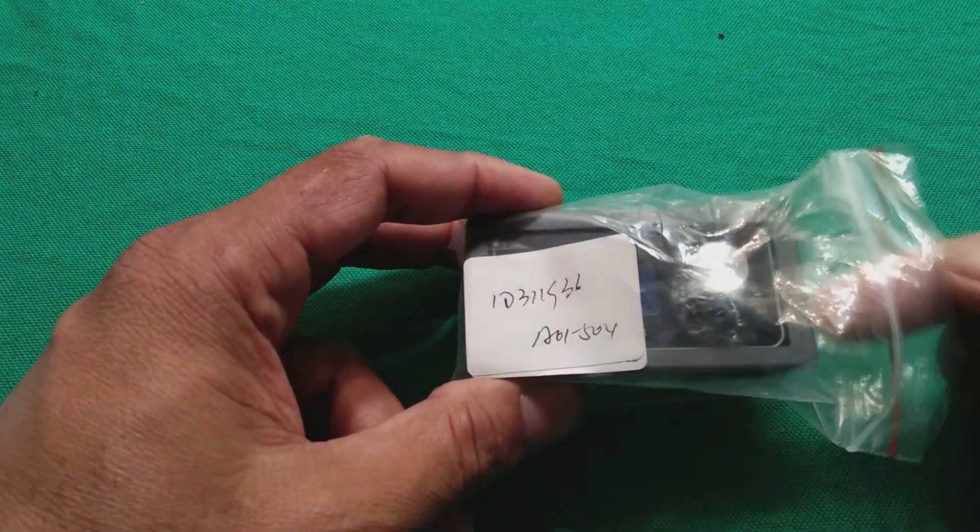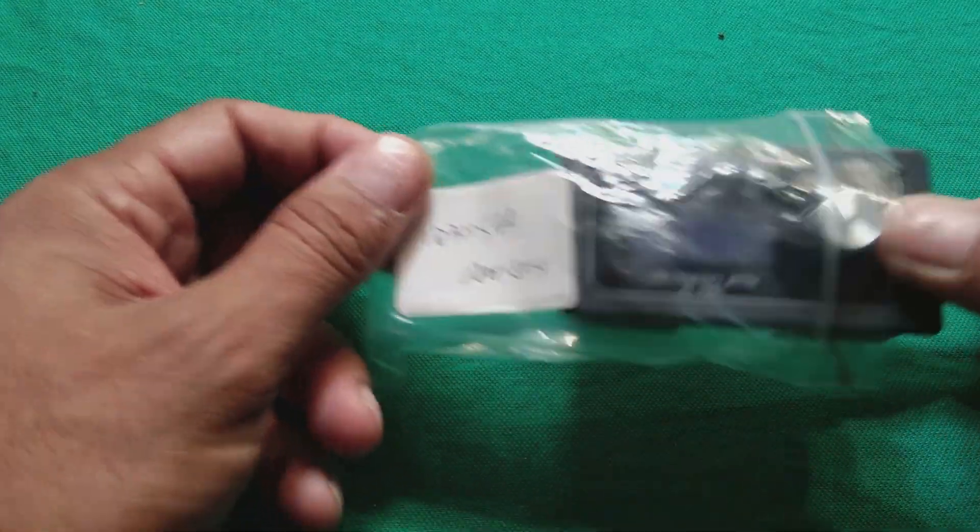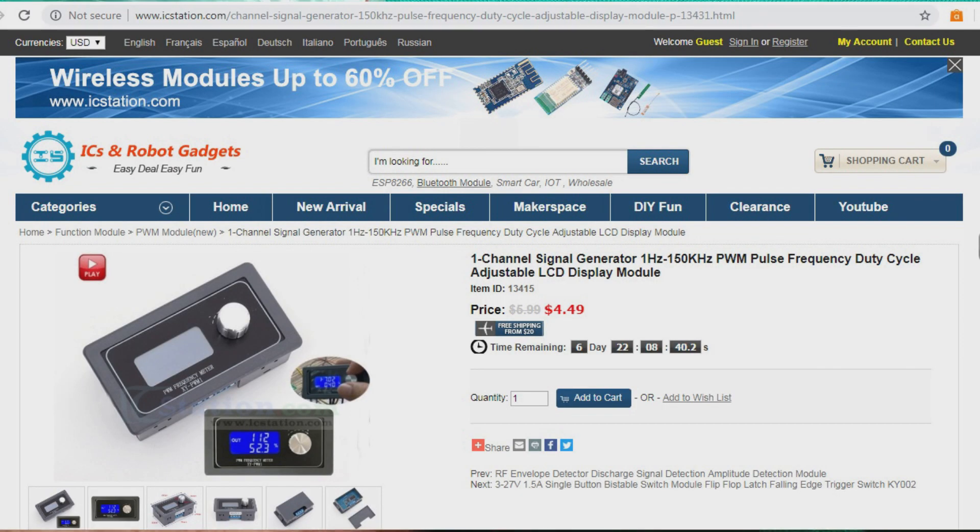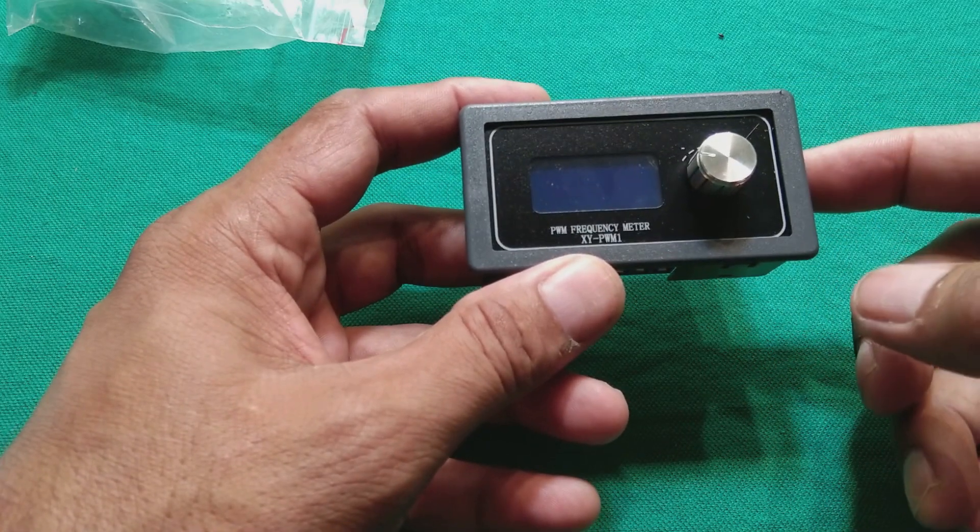We received this module from IC Station China. This is a beautiful single channel signal generator, 1 Hertz to 150 kilohertz PWM pulse frequency, duty cycle adjustable LCD display module. The regular price is $5.99 whereas they are offering it at $4.49. This module has a very beautiful feature that it can operate from voltages somewhere from 3.3 volt to 30 volt.